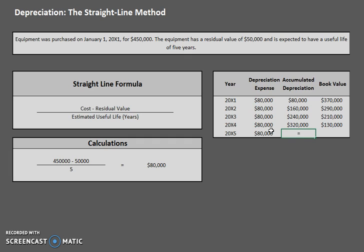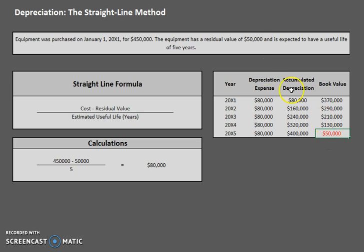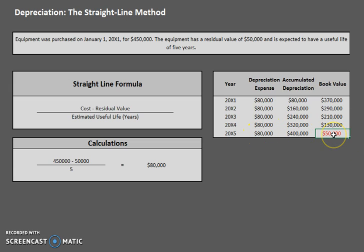One more year: $80,000 depreciation expense. We accumulated a little bit more this year, and our book value is $450,000 minus $400,000. This is an important one to check once you're done with these types of charts, because one important rule of depreciation is that we cannot depreciate past residual value. So if your book value is below your residual value, you need to go back and fix something. For straight line, that'll mean you probably made an error somewhere. In some other methods, it just means we depreciated too much. When we get to double declining depreciation, we'll talk about how we can change that last year so that our book value does not decrease below residual value.